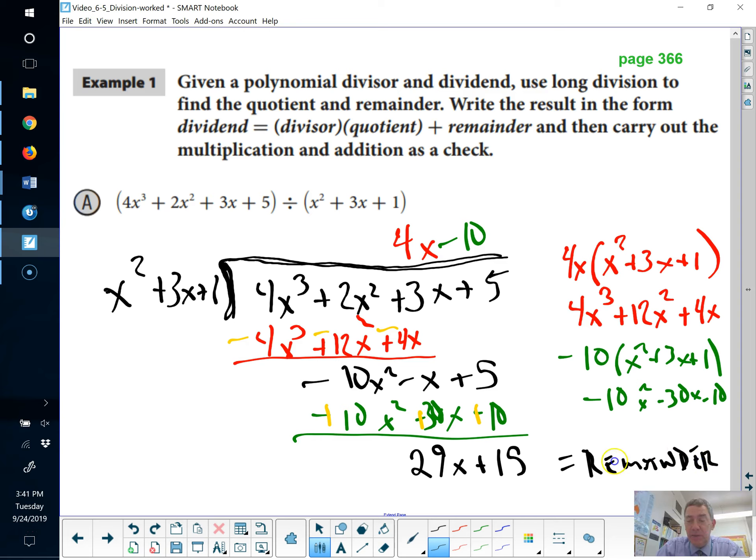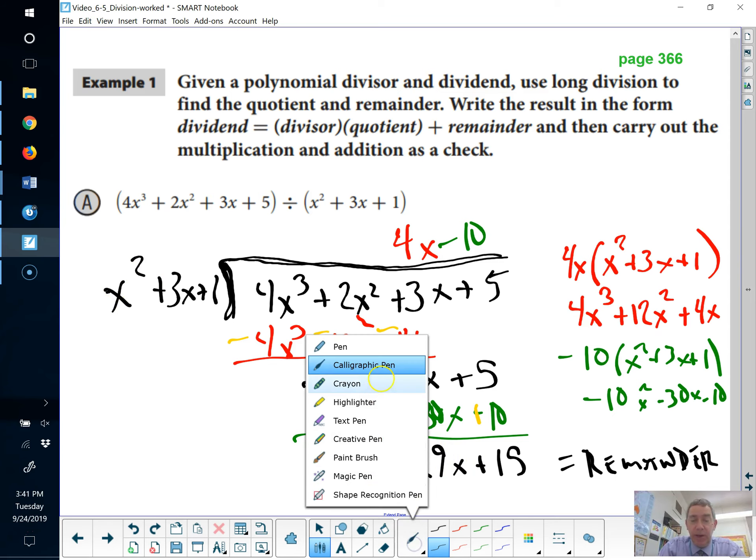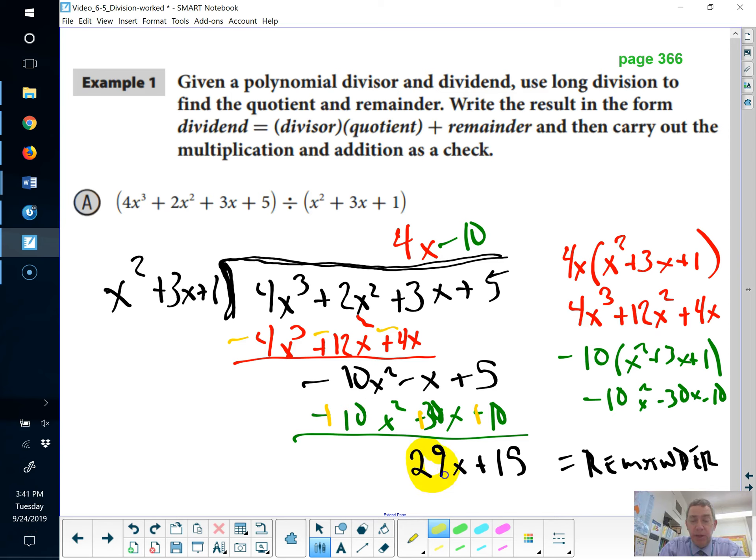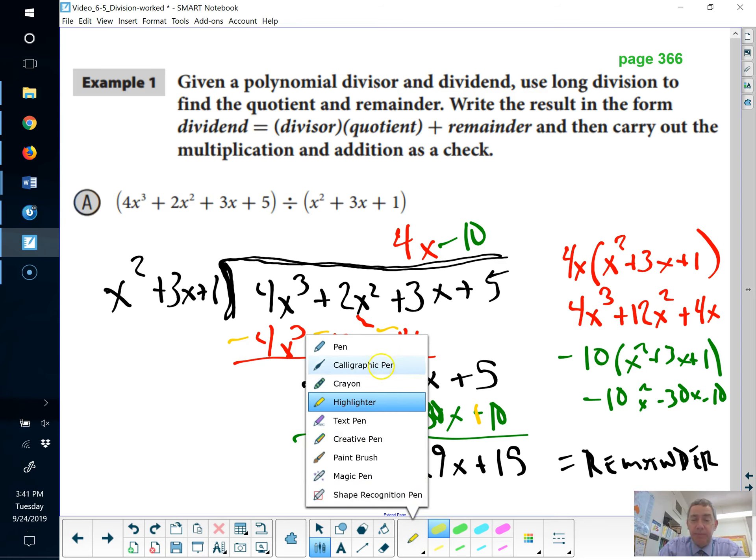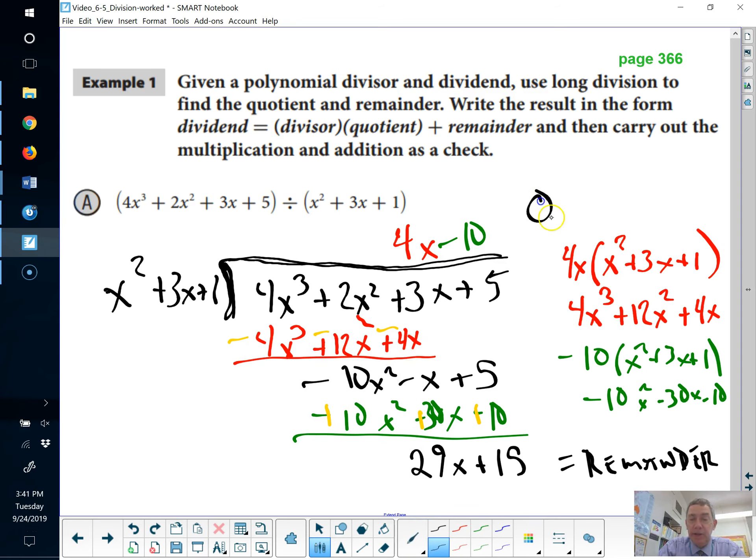And I know I'm done because now I have 29x down here. Up top, I've got x squared. There's no way that I'm going to put x squared into 29x because it's a higher power there. So, as soon as I've got a power that's smaller than the number, I've got my remainder. My quotient up top is the 4x minus 10.